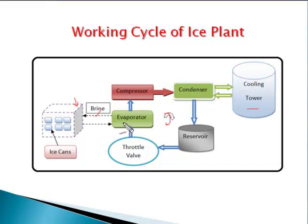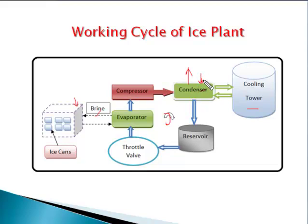The primary refrigerant absorbs heat in the evaporator from the brine solution. This refrigerant is then sent to the compressor, which compresses the refrigerant from low pressure to high pressure and sends it to the condenser, where heat extraction takes place. In the case of an ice plant, a water-cooled condenser is used because a larger amount of heat extraction is needed. The cooling medium from the cooling tower enters the condenser, and after absorbing heat, this water is sent back to the cooling tower.